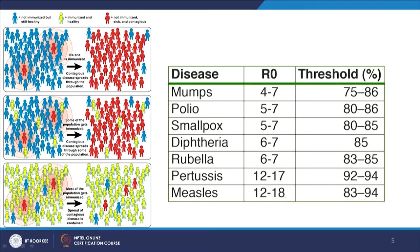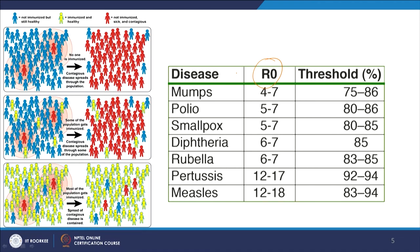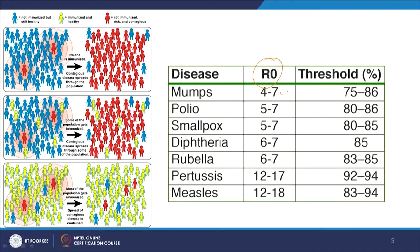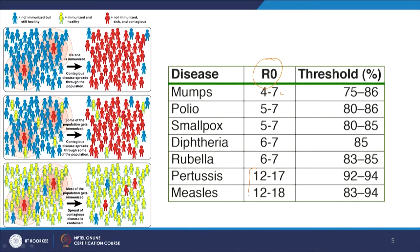Now let us look at immunity. When talking about diseases spreading, another very important thing to understand is how fast the disease is spreading. This is where you get the term R naught — a number that tells me how many people you will infect if you are a sick patient. For example, if I have mumps I will infect anywhere from 4 to 7 people; polio 5 to 7; smallpox 5 to 7; diphtheria and rubella 6 to 7. This becomes like a chain cycle. Pertussis and measles are highly contagious. The more the value of R naught, the more the disease is going to spread.